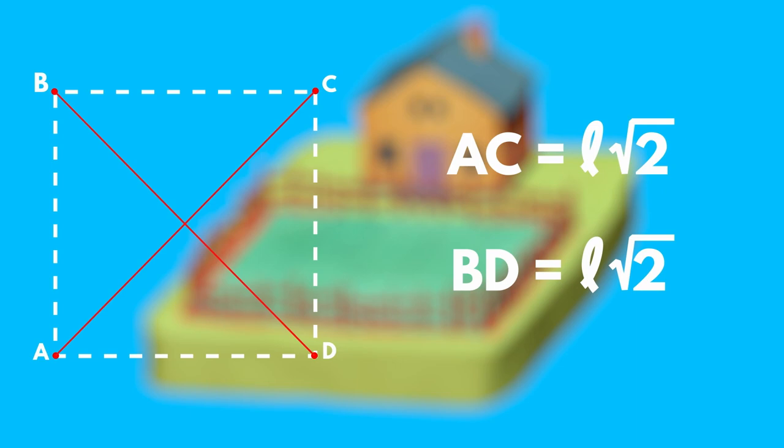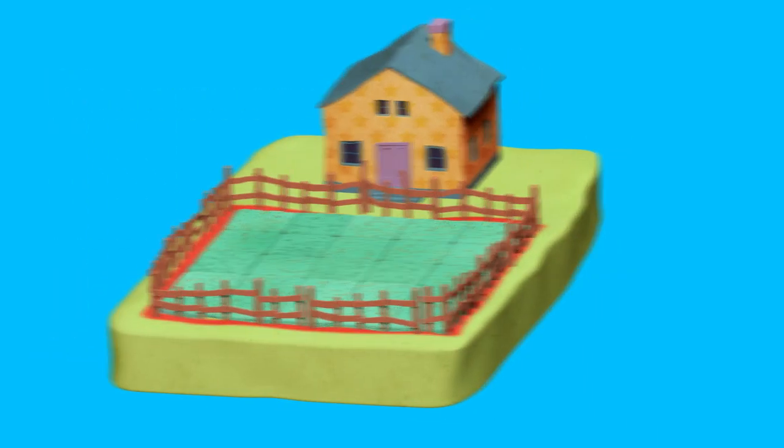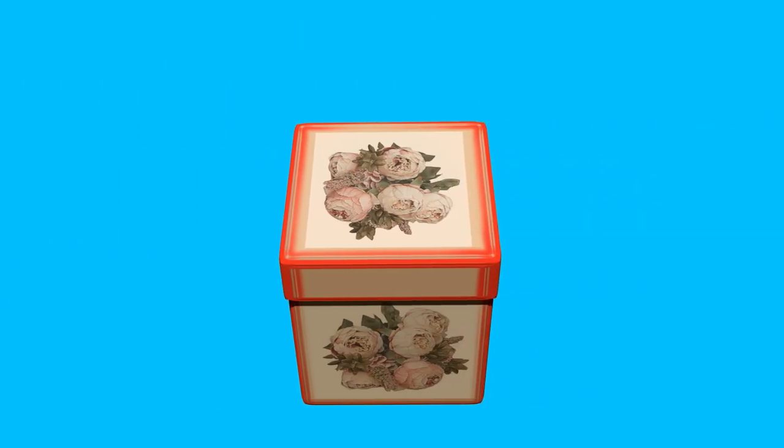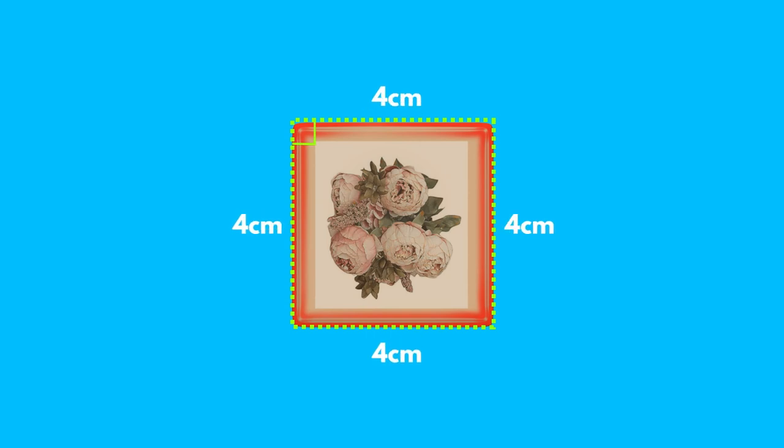Now, because you followed us with so much attention, we propose a checking game. Look at this gift box — which geometric shape does the cover of the box have, and why? Please pause to give the answer. Exactly! It's a quadrilateral with side lengths of 4 cm and it has a right angle. Being a rhombus with a right angle, the gift box cover is a square.